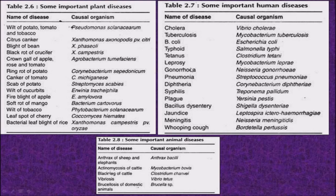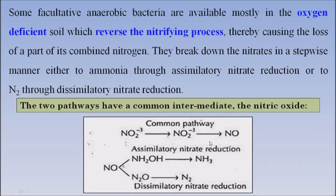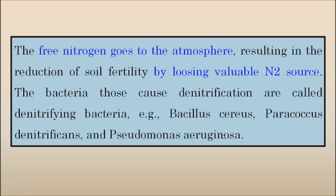You can go through it by pausing the video. Friends, the next harmful activity of microorganisms is reduction of soil fertility. Some facultative anaerobic bacteria, available mostly in oxygen-deficient soil, reverse the nitrifying process, thereby causing the loss of part of its combined nitrogen. They break down the nitrates in a stepwise manner either to ammonia through assimilatory nitrate reduction, or to nitrogen through dissimilatory nitrate reduction. The free nitrogen goes to the atmosphere, resulting in the reduction of soil fertility by losing a valuable nitrogen source. The bacteria that cause denitrification are called denitrifying bacteria.